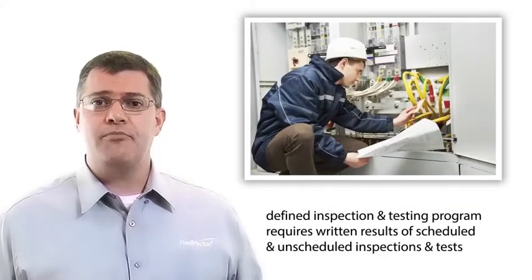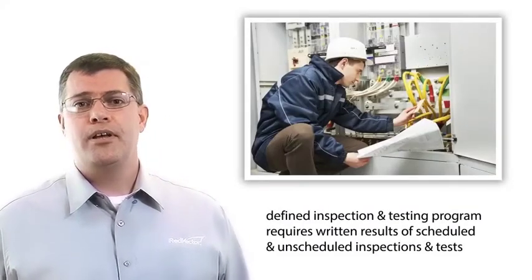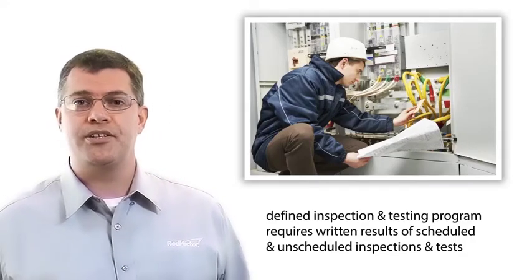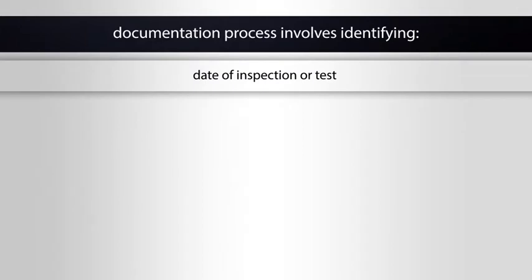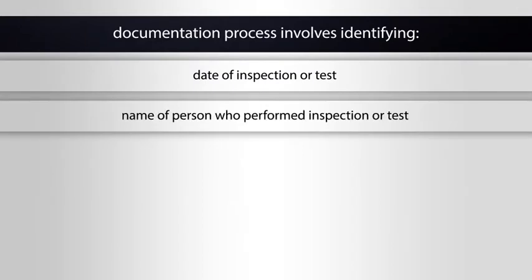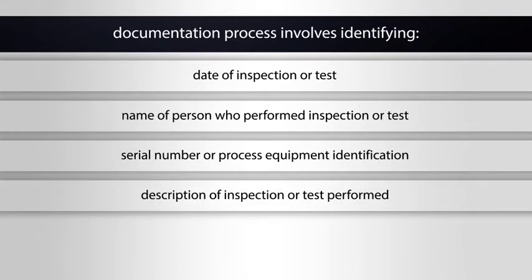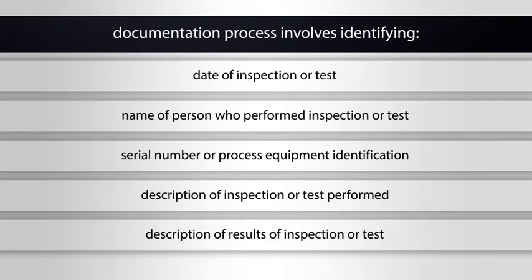The defined inspection and testing program for each piece of equipment also requires actual written results of scheduled and even unscheduled inspections and tests. A valid documentation process involves identifying the date of the inspection or test, the name of the person who performed the inspection or test, the serial number or other unique process equipment identification on which the inspection or test was performed, and a complete description of the inspection or test performed.